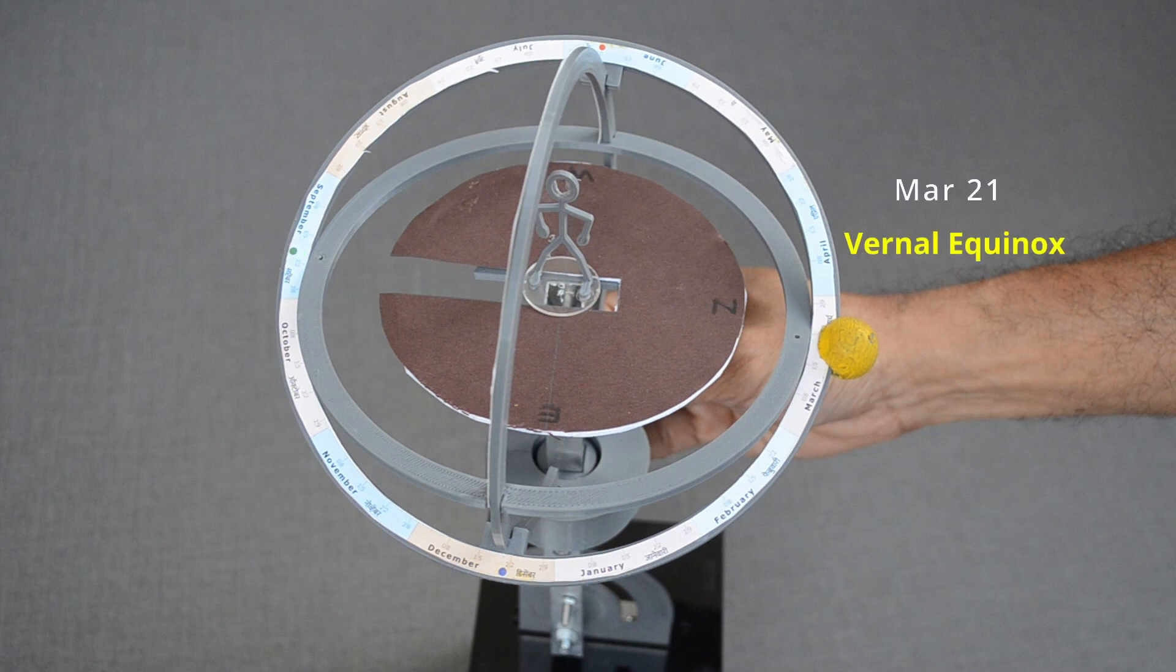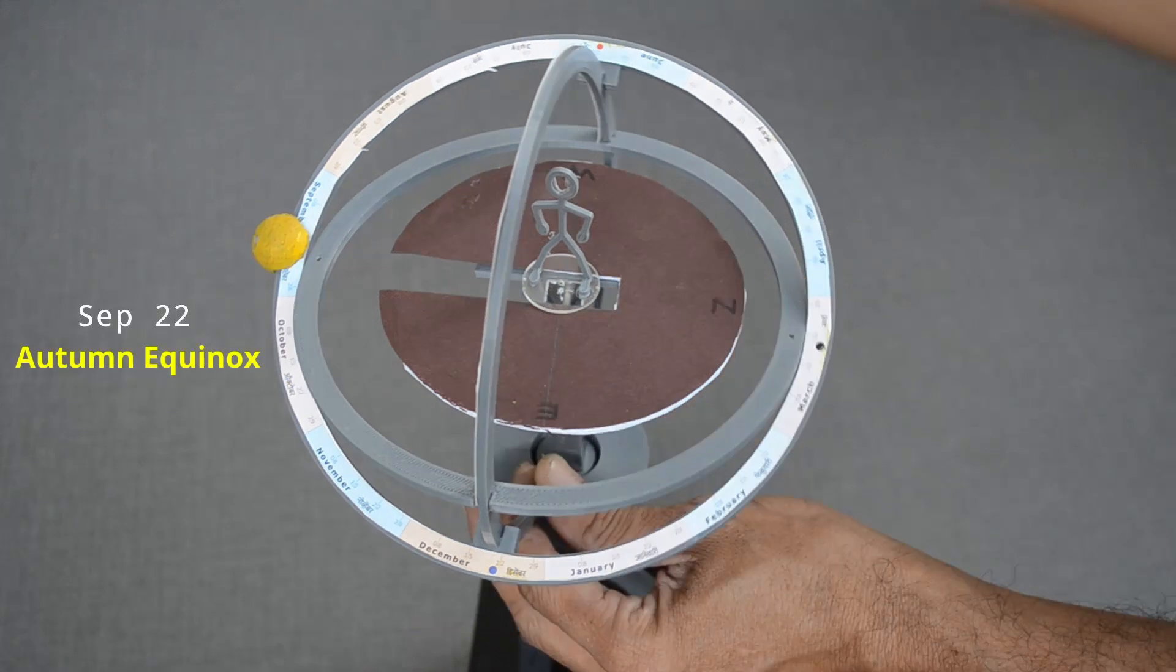This is vernal equinox, March 21st. And this is autumnal equinox, September 22nd.